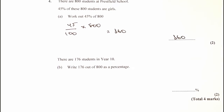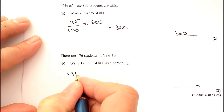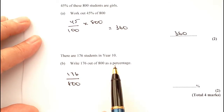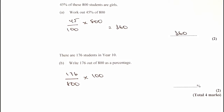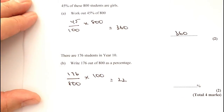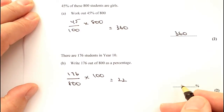In part B of this question, there are 176 students in year 10. Write 176 out of 800 as a percentage. Well, 'out of' means fraction, so we're saying it's 176 out of 800, and as a percentage is multiplied by 100. Plug that into a calculator and you should come out with 22. So actually, 176 out of 800 as a percentage is 22%.